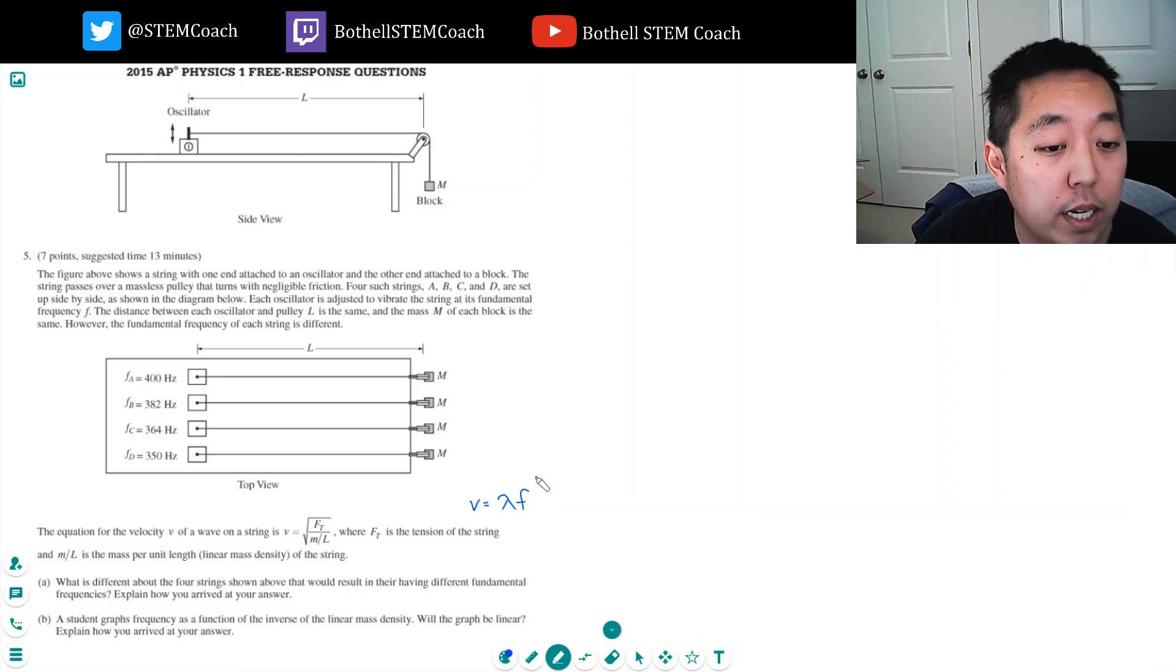Now, because all of the L's are the same, in the fundamental frequency, the wavelength is the same. The frequency is different. So, wavelength is same because same L, same length of the rope. But F varies. Different fundamental frequency, right?